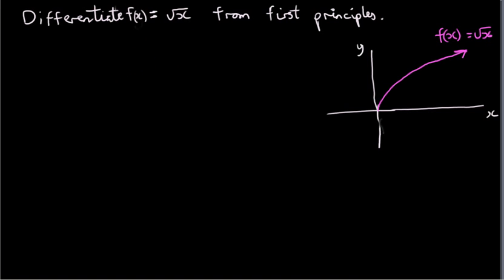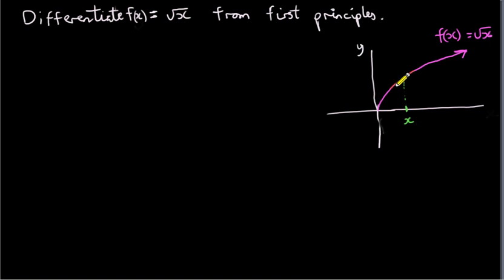So what we're doing is we're considering the slope of a tangent to this curve. We're taking any value x on our x-axis, and we want to get the slope of the tangent at x.